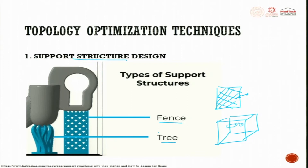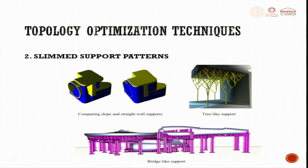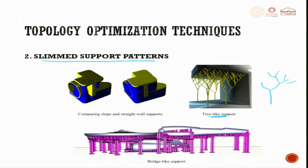Biomimicking is how many successful manufacturing technologies are developed — for example, solar panels got the idea from leaves. Moving on to slimmed support patterns: comparing slope and straight wall support, slimmed support follows a tree-like structure with a shoot, branches, and leaves, further reducing the amount of material used for support. For huge components, optimizing the support with slimmed support patterns gives major savings.